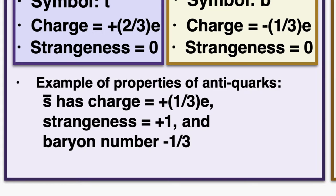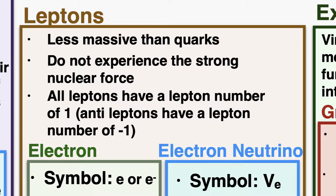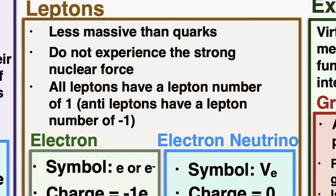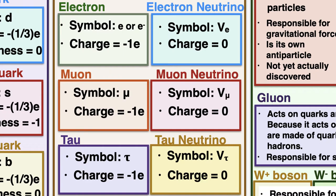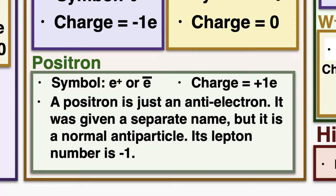The next type of fundamental particle is the lepton. Leptons are much less massive than quarks and don't experience the strong nuclear force. All leptons have a lepton number of 1, and anti-leptons have a lepton number of −1. The six leptons are: electrons, muons, and tau particles, plus electron neutrinos, muon neutrinos, and tau neutrinos. Anti-versions of each exist with opposite values. Note that a positron is simply an anti-electron with a lepton number of −1.